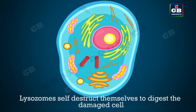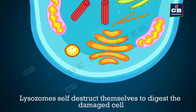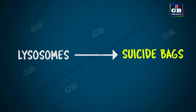Sometimes if a cell is damaged, the cellular components try to repair it — like proteins and fats from the endoplasmic reticulum, which are diverted to repair the cell. But if the damage is beyond repair, then lysosomes help the cell to self-destruct. Lysosomes burst and the digestive enzymes present in them digest the components of the cell. That is why lysosomes are called suicide bags.